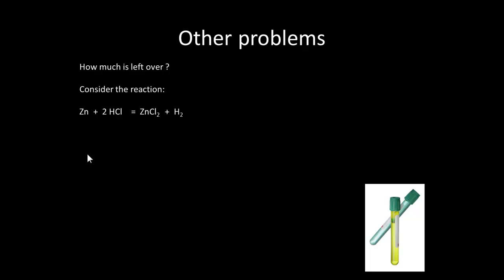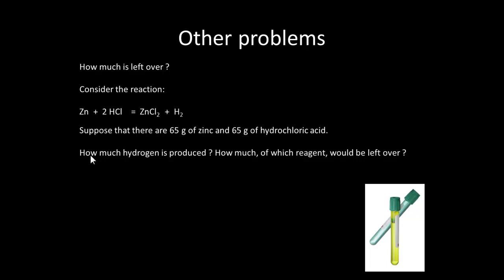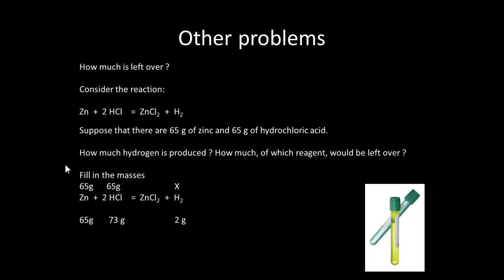Here's another problem you might come across — how much is left over? We have a reaction: zinc plus hydrochloric acid gives zinc chloride plus hydrogen. Suppose we've got 65 grams of zinc and 65 grams of hydrochloric acid. We react these together and want to know how much hydrogen is produced, how much is left over, and which reagent would be left over. We put in the molecular masses: 65 grams of zinc reacts with 2 lots of hydrochloric acid, which means 65 grams. Normally, 65 grams of zinc would react with 75 grams of HCl to give 2 grams of hydrogen.